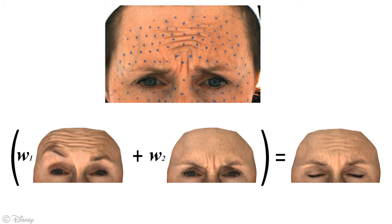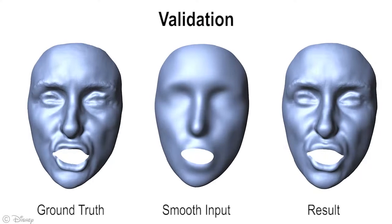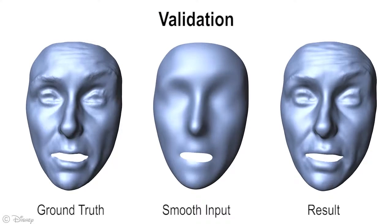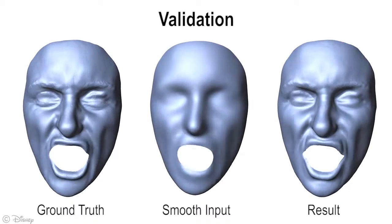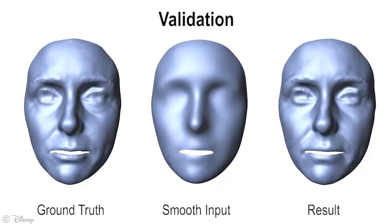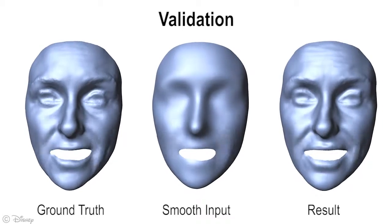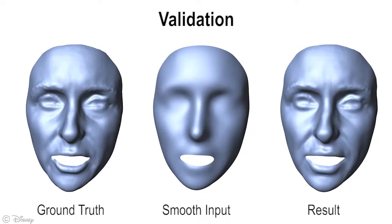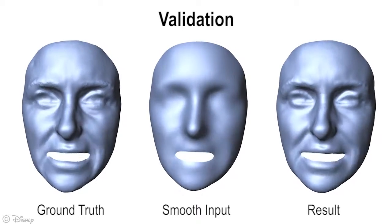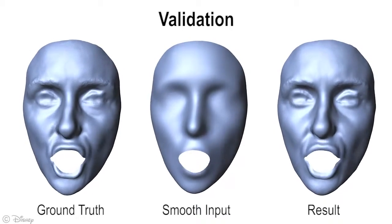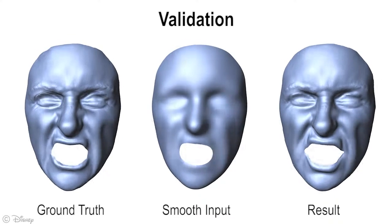Here we show an example where the input expression at the top is not in the database, so our algorithm automatically blends between two different database frames to create a closely matching result. We test the algorithm on a validation example consisting of a high-resolution ground truth sequence, which of course is not part of the database. To mimic a low-resolution input, we smooth the ground truth sequence. The resulting enhancement closely matches the original ground truth.